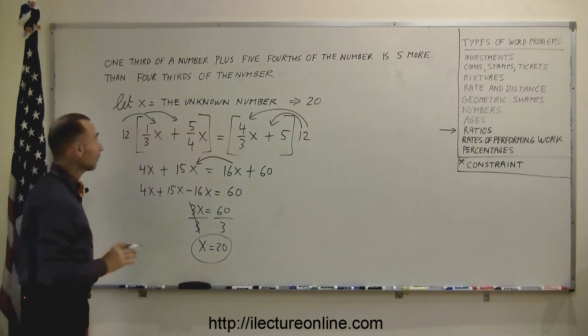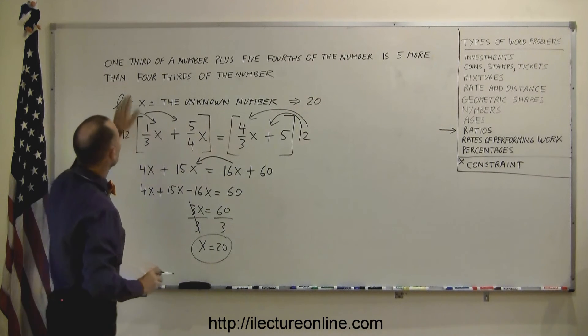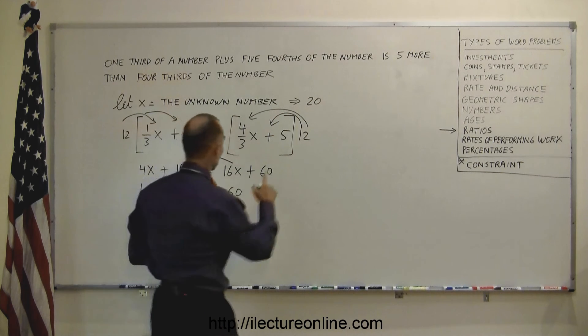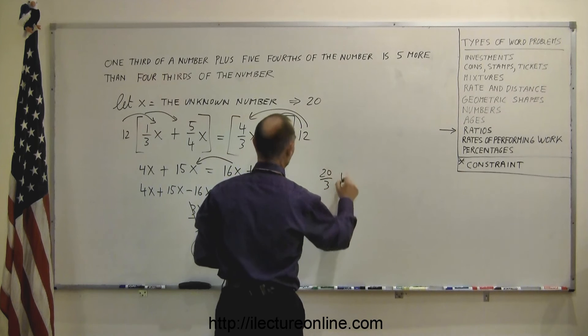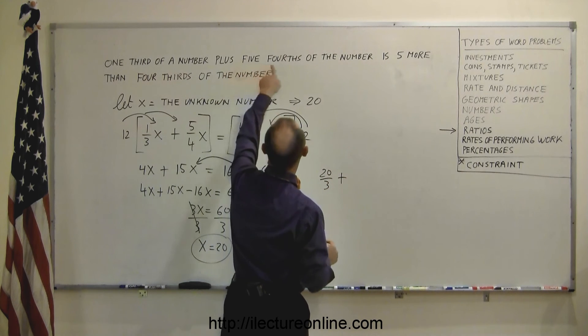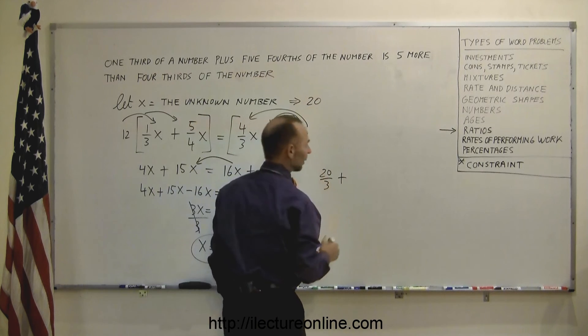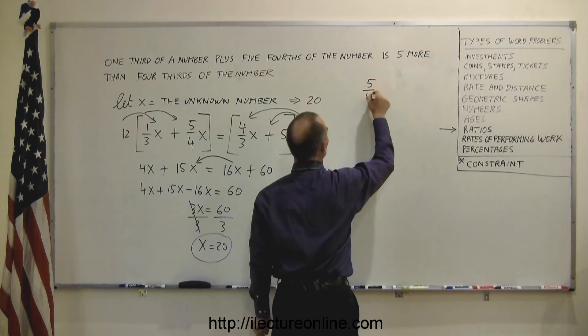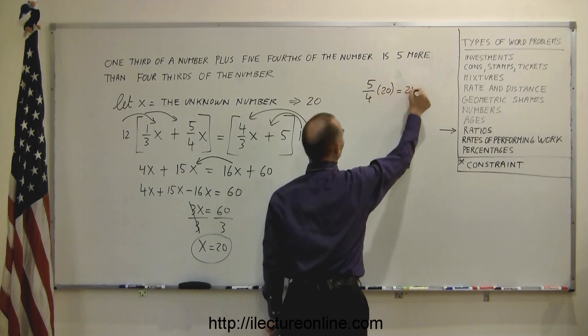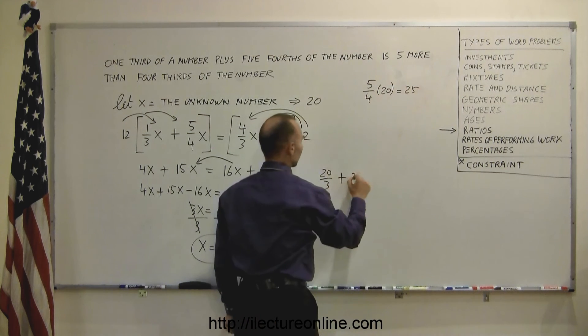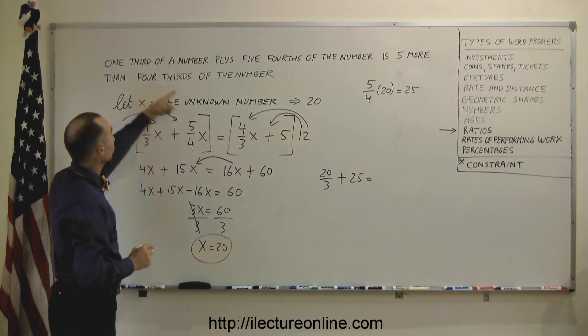And just to make sure we did the right things here, and we got the right answer, let's go through this. What is 1 third of the unknown number? So 1 third of 20 is, well, that's 20 over 3. And if I add to that, 5 fourths of the number, what is 5 fourths of 20? Well, let's do it here. 5 fourths times 20. Well, 20 divided by 4 is 5. 5 times 5 is 25. So 20 over 3 plus 25. That should equal 5 more than 4 thirds of the number.